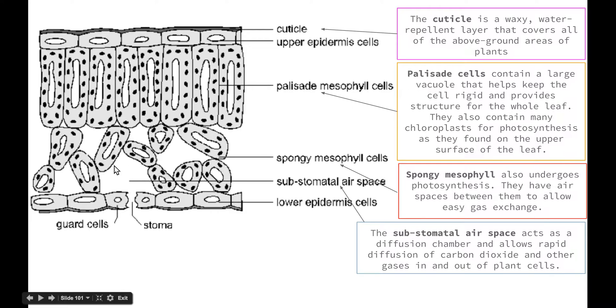Those air spaces open up into these substomatal air spaces. These act as a diffusion chamber and allow the rapid diffusion of carbon dioxide and other gases in and out of the plant cells. We need plenty of carbon dioxide for photosynthesis to take place but we also need to get rid of the oxygen as the plant doesn't require all of it so it needs to go back out into the atmosphere.